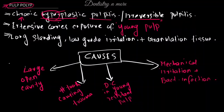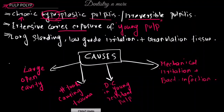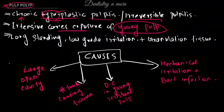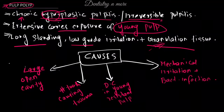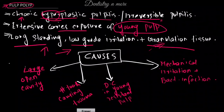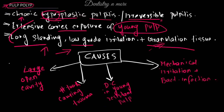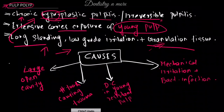It is always seen on teeth with extensive caries exposure and mostly on the young pulp — that is, recently erupted teeth which are one to two years old. In those cases we can see the pulp polyp, resulting from a long-standing and low-grade irritation. That is why it has a chronic nature — it is a very low-grade infection, not a high-grade one.